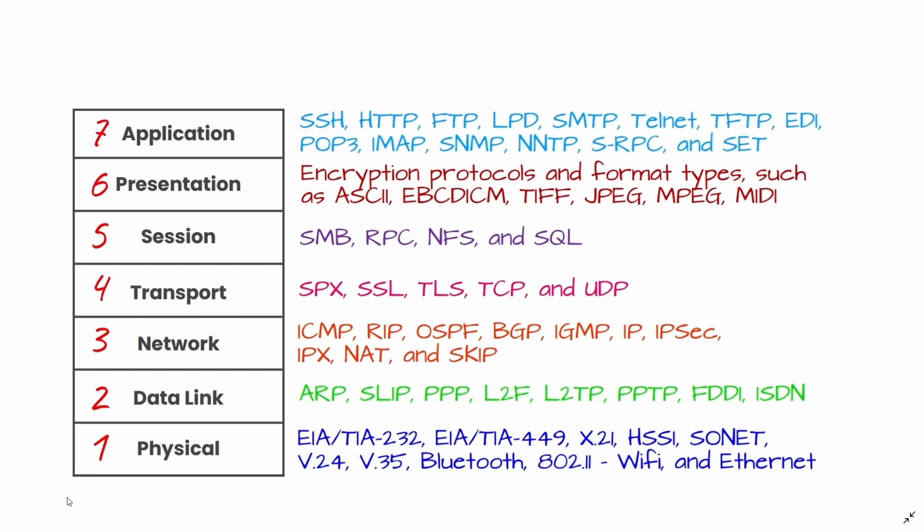The second layer of the OSI model is the data link layer. Directly connected nodes are used to perform node-to-node data transfer where the data is packaged into frames. The data link layer also corrects errors that may have occurred at the physical layer. It encompasses two sub-layers: the first is Media Access Control, also known as MAC, which provides flow control and multiplexing for device transmissions over a network. The second is the Logical Link Control, also known as LLC, which provides flow and error control over the physical medium and identifies line protocols.